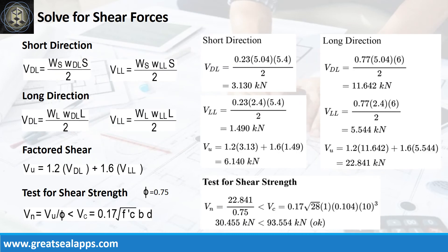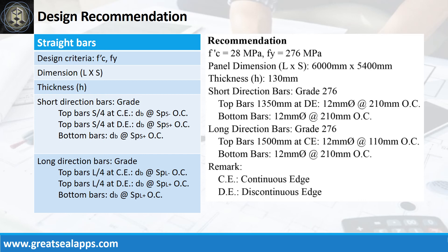At short direction, the shear force from dead load is 3.13 kN and live load is 1.49 kN, for a factored shear force of 6.14 kN. At long direction, the shear force from dead load is 11.642 kN and live load is 5.544 kN, for a factored shear force of 22.841 kN. The nominal shear force is 30.455 kN, less than the 93.554 kN concrete capacity. Design recommendation as follows.